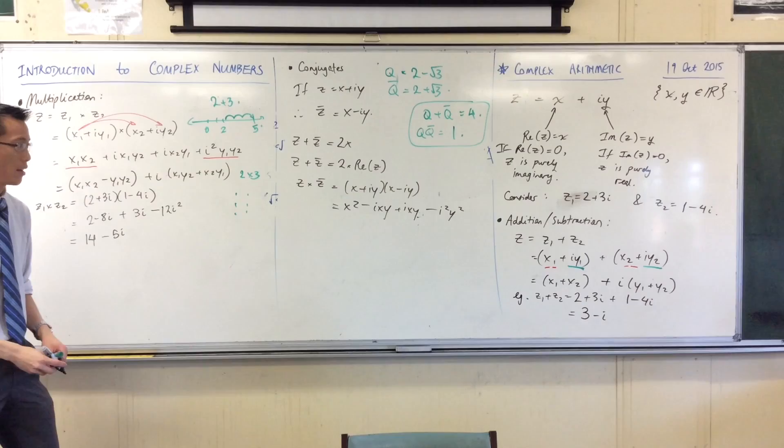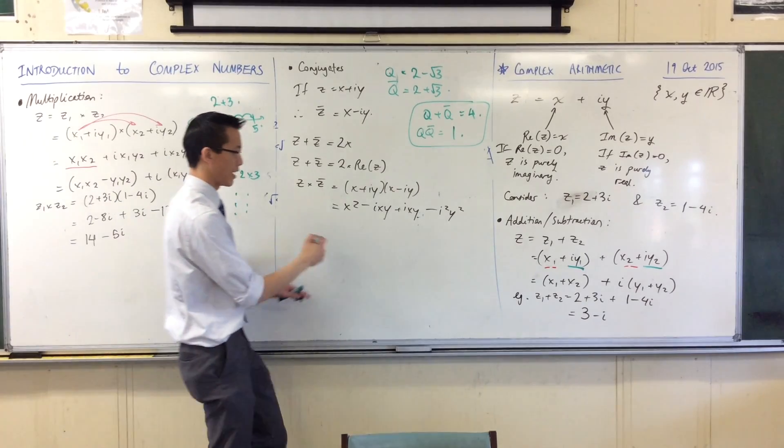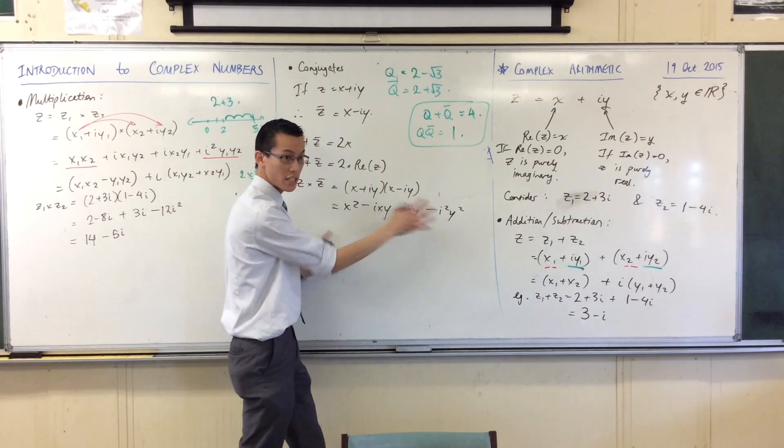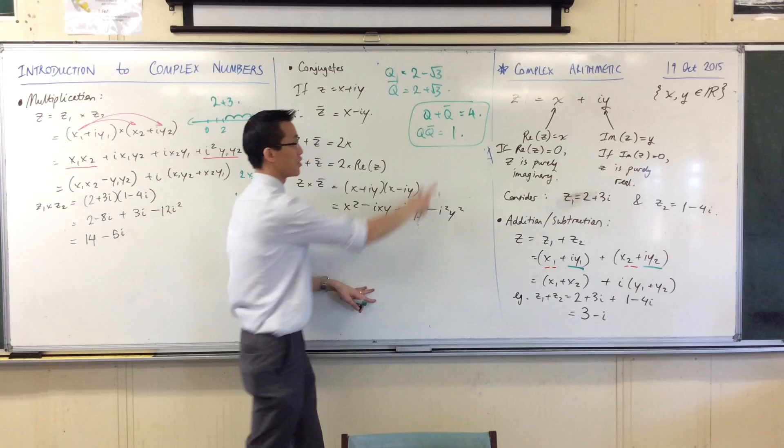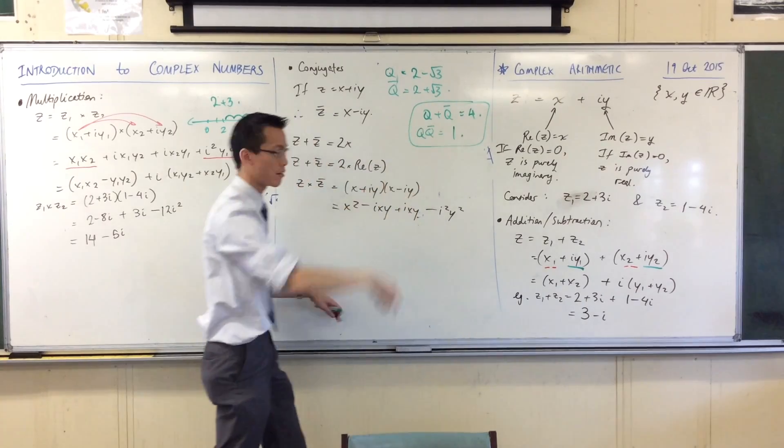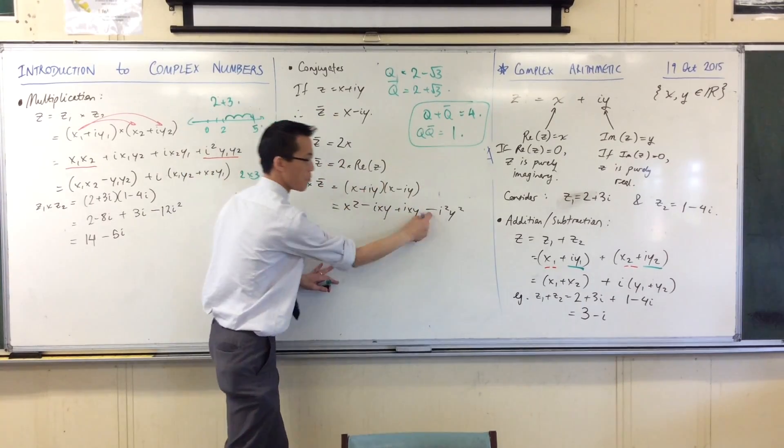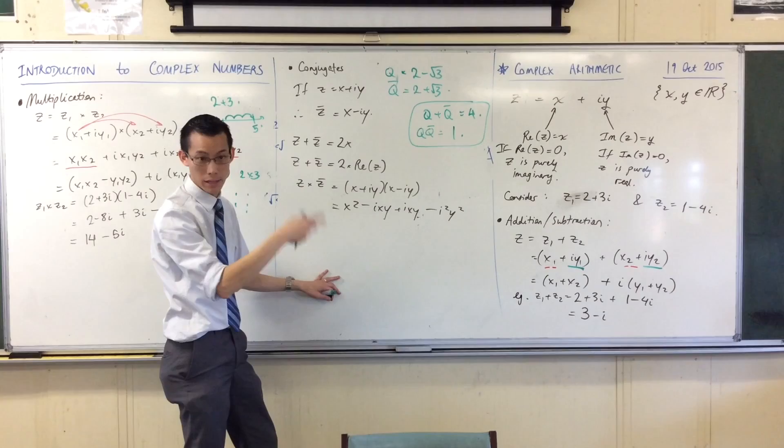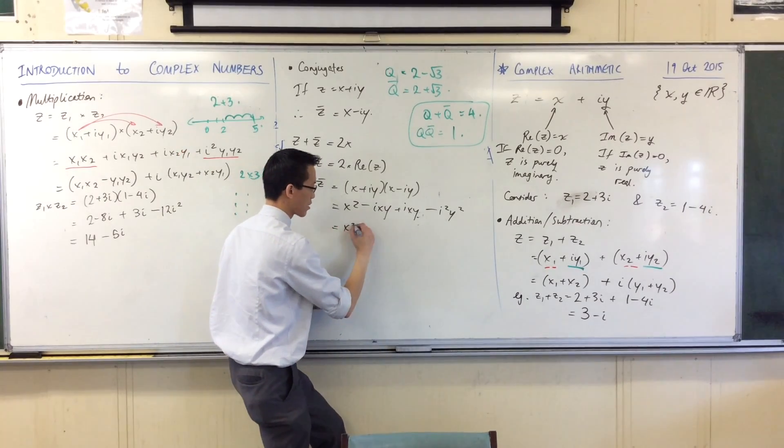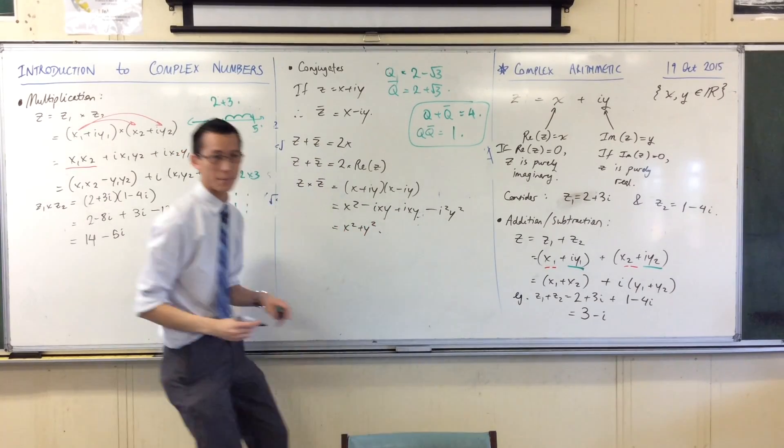You see that? You see how I'm pairing things? Now what's going on? Firstly, these two guys, they're just going to disappear. They're going to cancel each other out, just like they cancelled each other out up here, right? Secondly, that minus i squared turns into a plus 1. So this, in fact, is x squared plus y squared.